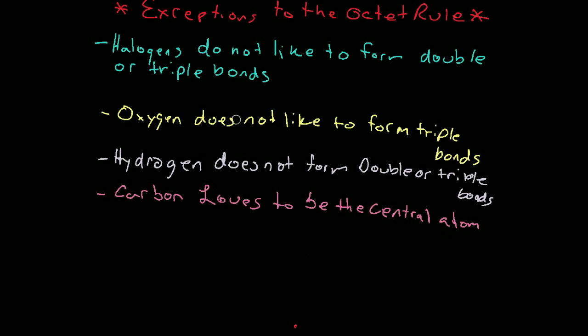So those were kind of the guidelines we went to form this octet rule where valence electrons all had eight, they formed eight valence electrons and two for hydrogen and helium.